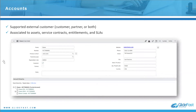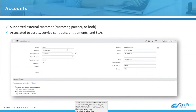Here's an example of an account record. Accounts support external customers and can be of type customer, partner, or both. They can be associated to assets, contracts, entitlements, and SLAs. Looking at a Boxio account, you can see the customer checkbox is checked, and there's some account information on the right like website address. You can also have parent-child relationships with accounts — the main Boxio account has three child accounts: USA, EMEA, and Canada.